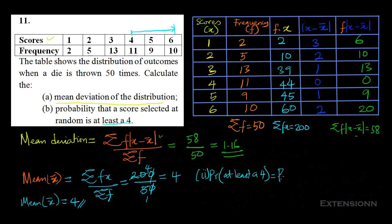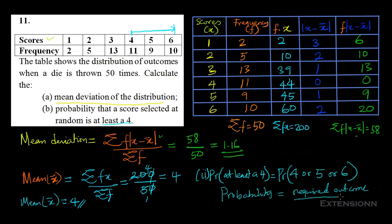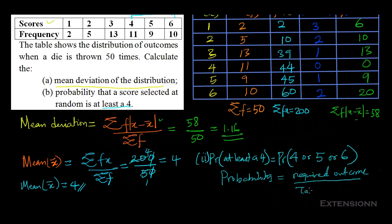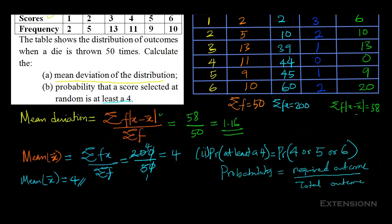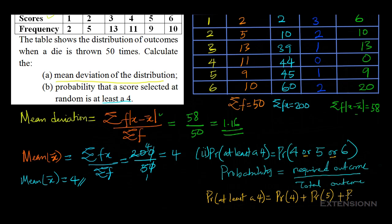The probability of at least a 4 is the probability of picking 4, 5, or 6. Since probability = required outcomes / total outcomes, and since we use 'or' we apply the addition rule: P(at least 4) = P(4) + P(5) + P(6).